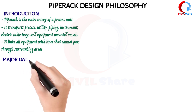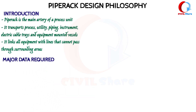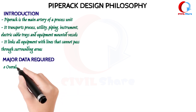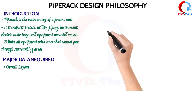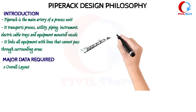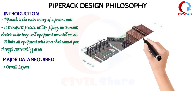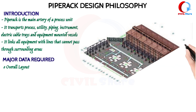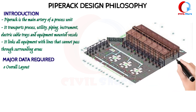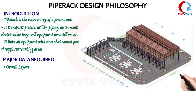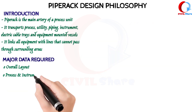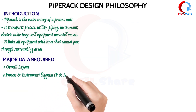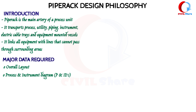Major data required: Overall Layout. An overall layout is basically an arrangement drawing that shows the equipment and supporting facilities like Pipe Racks, structures, buildings, and roads that are required for the process facility within a battery limit.